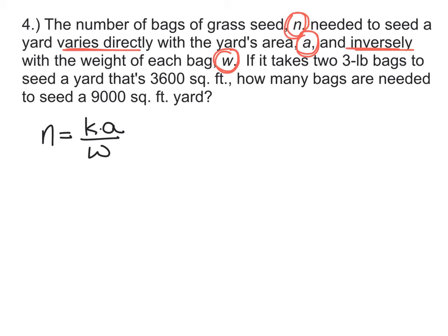This is a crucial first step, just getting all of our variables in the right spot. After that, we can start to try and figure it out. First of all, the question begins by saying, if it takes two three-pound bags to seed a yard that's 3,600 square feet. That gives us a lot of numbers that we can start plugging into our equation. Now remember, N was the number of bags of grass seed. And looking at this sentence, if it takes two three-pound bags, that means that there's going to be two bags. The area of the yard was the 3,600 square feet. And W, remember that, was the weight of each bag. And it said that it took two three-pound bags. So the weight is three pounds.